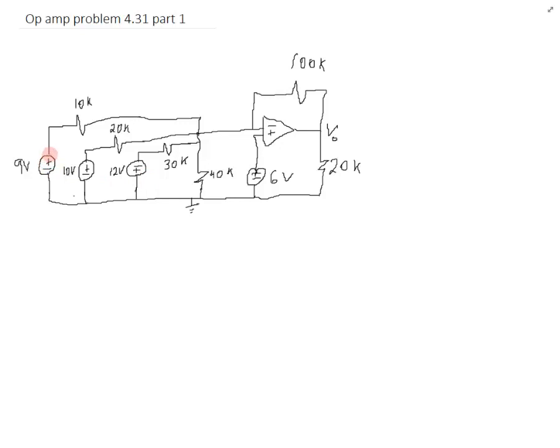So first we're going to find out how much the 9 volt source contributes to Vout. We short out all the voltage sources. And what happens here is since we're shorting out this 6 volt source, this ground becomes this node right here. Because it's the same voltage as this plus side which is the same voltage as the negative side. And this is all one big node which is going to be 0 volts.